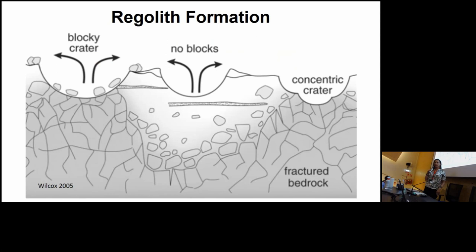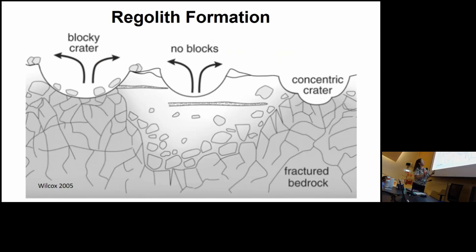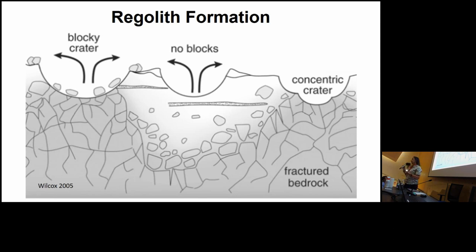The lunar surface is covered in regolith, and by regolith I am referring to the loose layer of broken up rocks that covers the surface of the moon, formed primarily by meteorite impact. Here you can see a schematic from a paper by Wilcox in 2005 — a cross-section of the regolith. The first point is that the regolith is not a consistent depth over the surface.